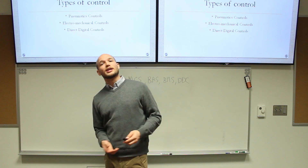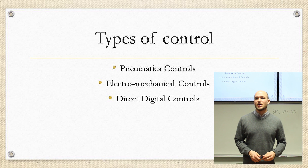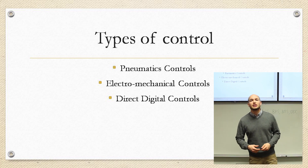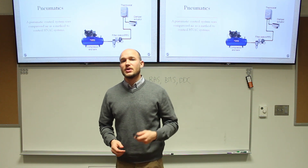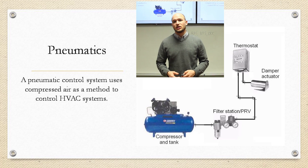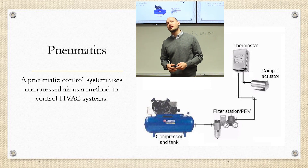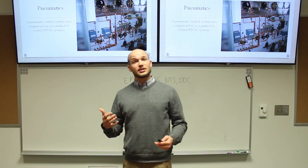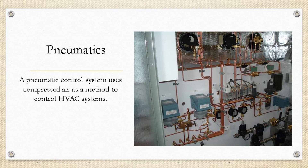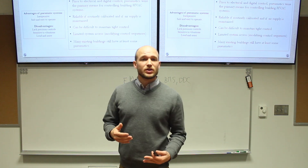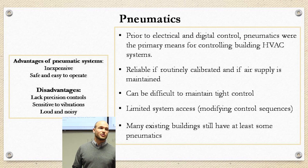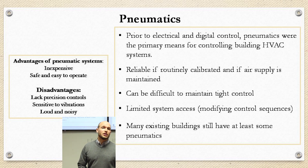There are three main types of controls to touch on: pneumatic, electromechanical, and DDC. Pneumatic was one of the first systems used to control HVAC. It uses compressed air — the drawing shown is a simplified version, but pneumatics can get very intense with a lot of tubing, piping, and places for air leaks. You're not going to see this system installed nowadays, but you will see it in the field when retrofitting or working on an existing building, as quite a few systems still use pneumatics.